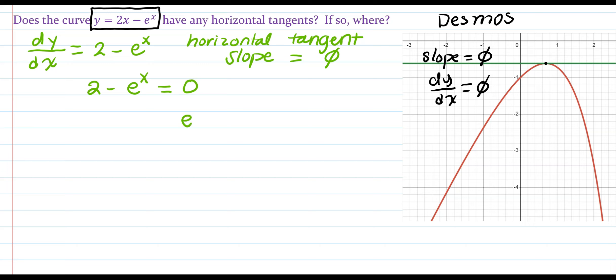Solving for x, e to the x is equal to 2. And to undo exponent, we would use log, in this case, log base e. So, x will equal to log base e of 2.